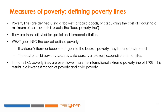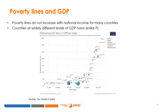What goes into the basket defines poverty. If children's items and foods do not go into the basket, child poverty may be underestimated. The cost of child services, such as child care, is a relevant expenditure for families. National poverty lines can be tricky — sometimes they do not increase with the increase in national income, remaining artificially low. And for many low-income countries, they tend to be lower than the international line, leading to underestimations of poverty. National poverty lines are partially the result of a political process, especially if the statistical office is not clearly independent from the government.